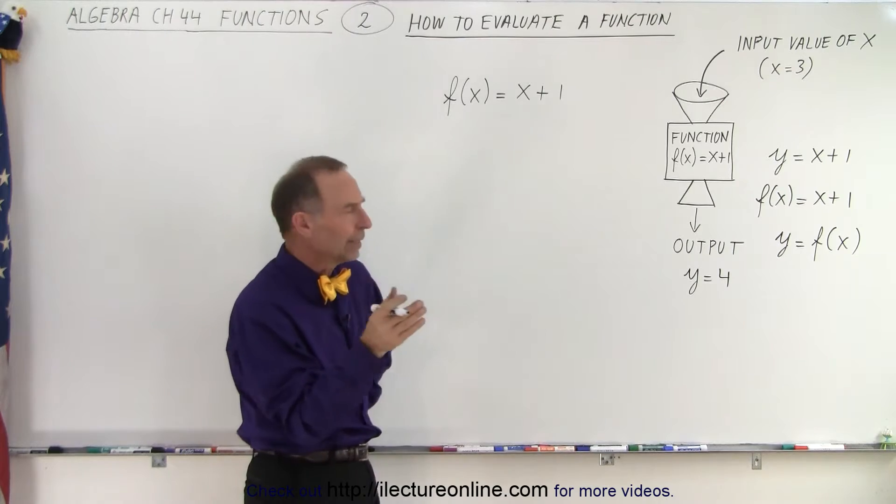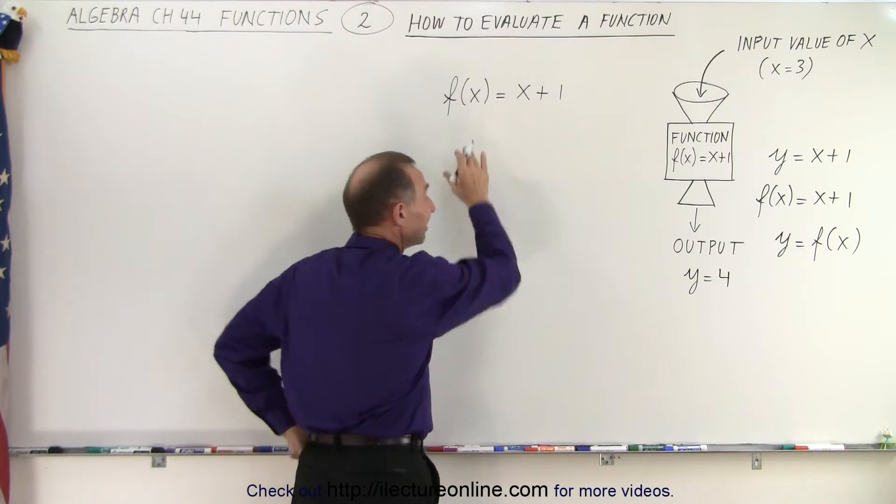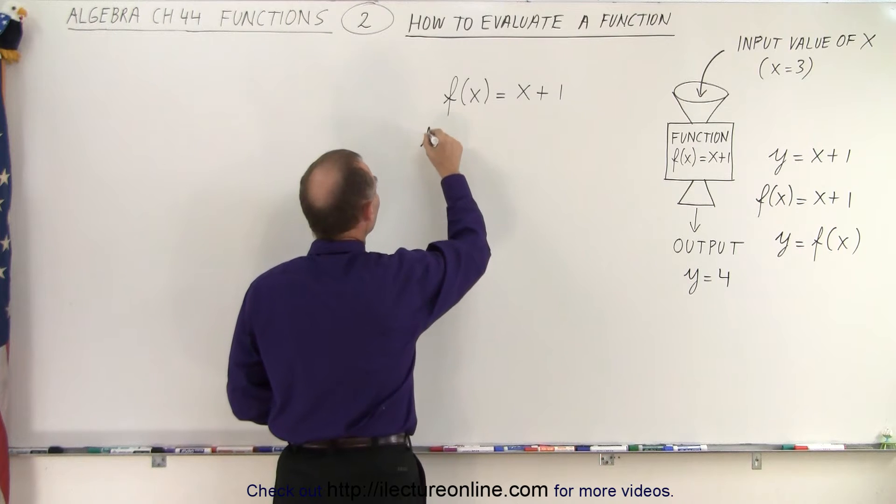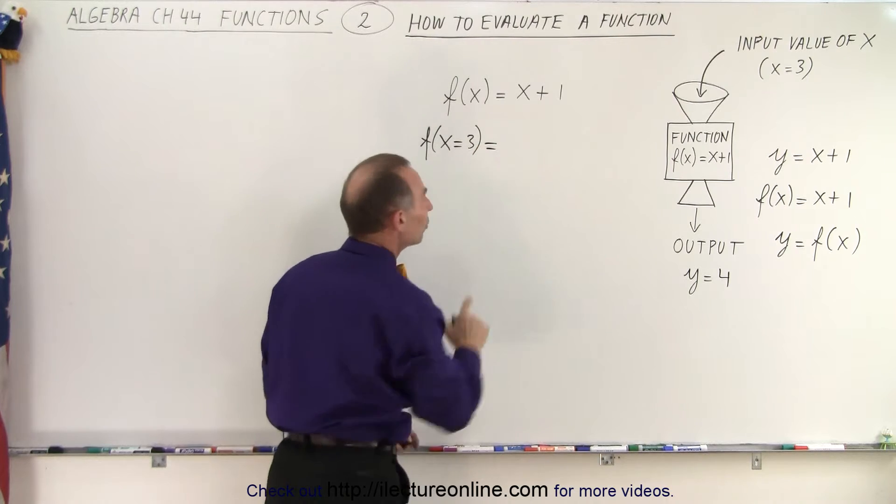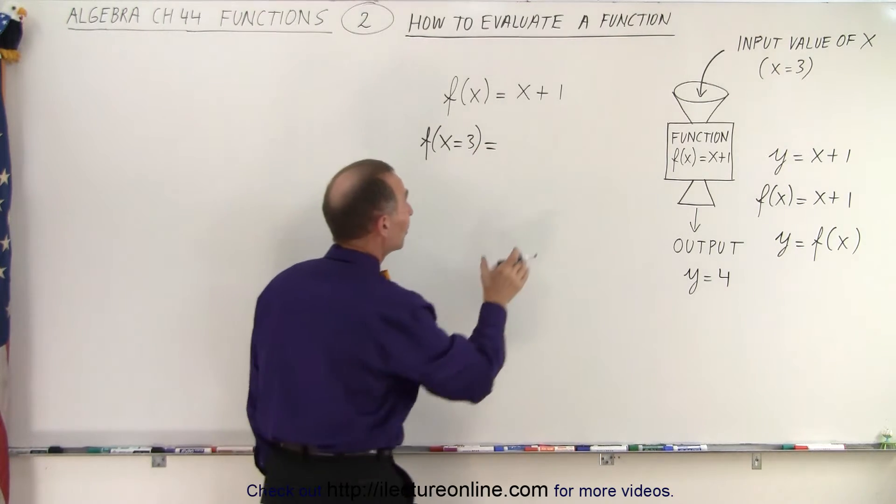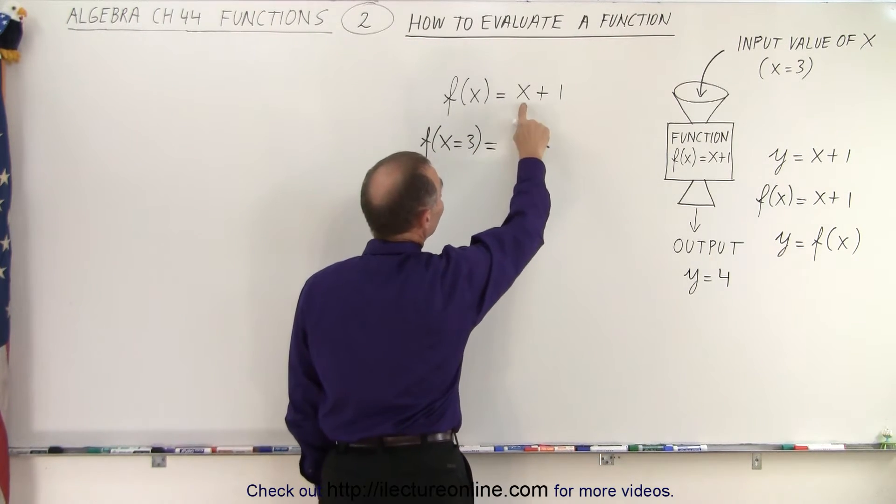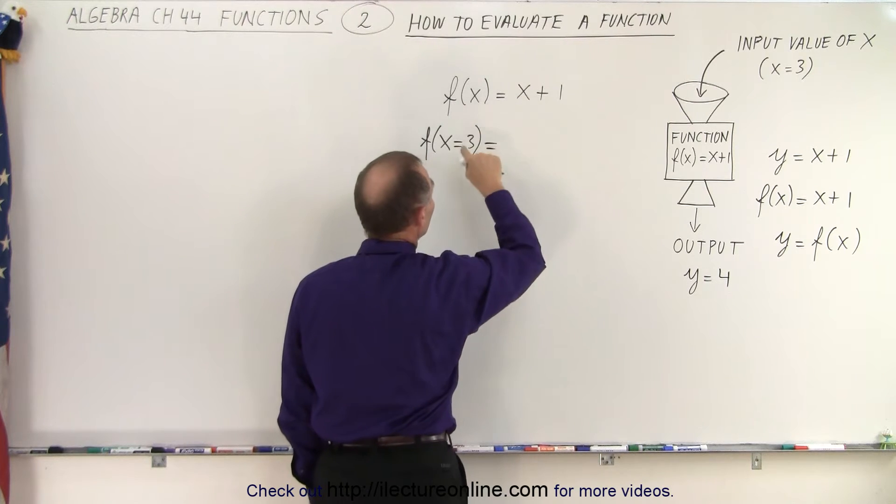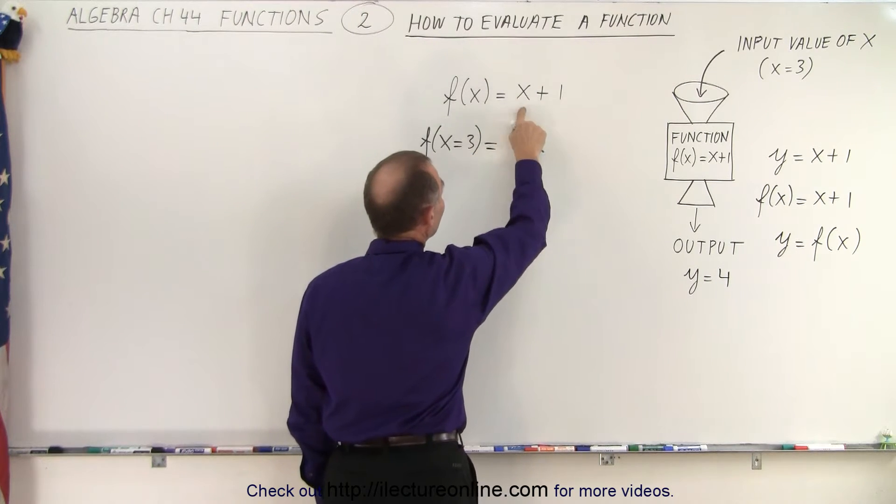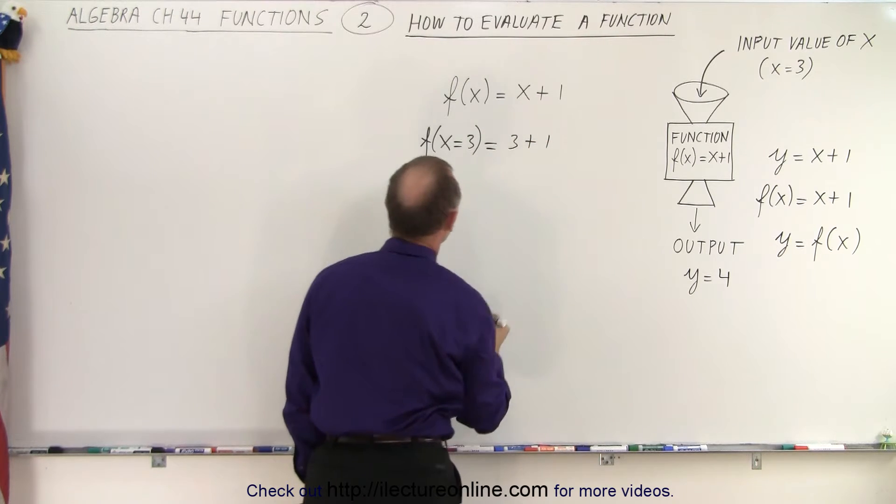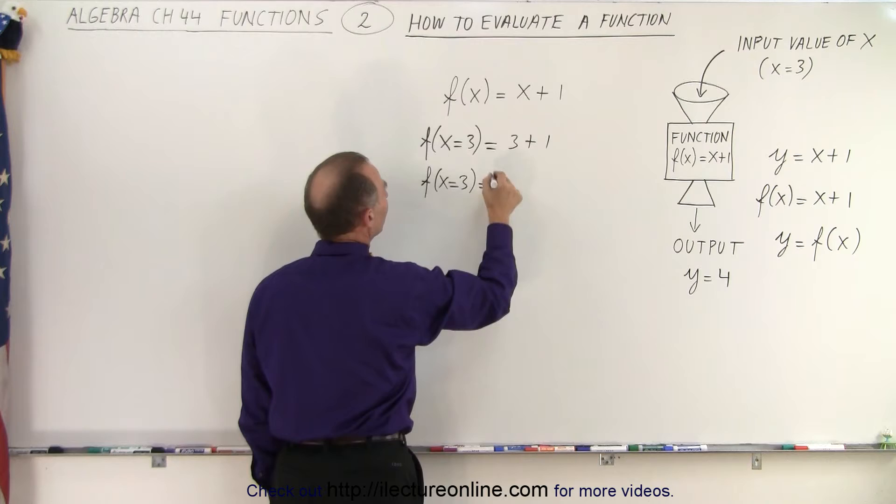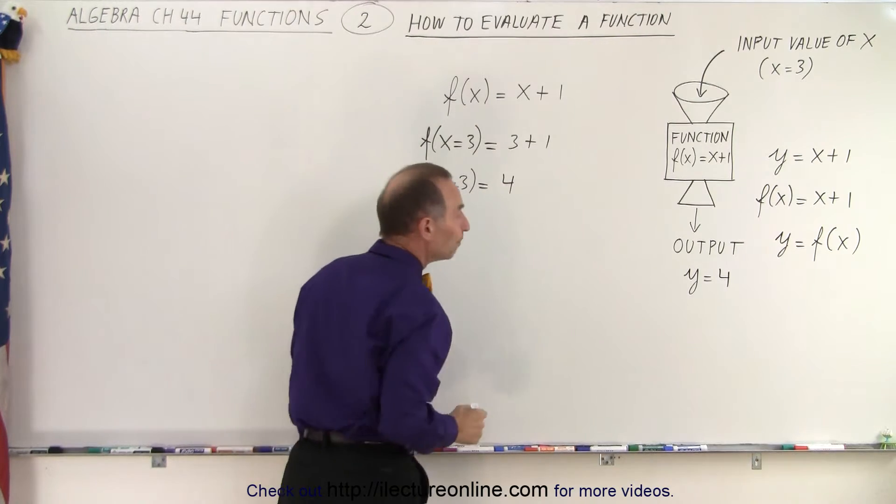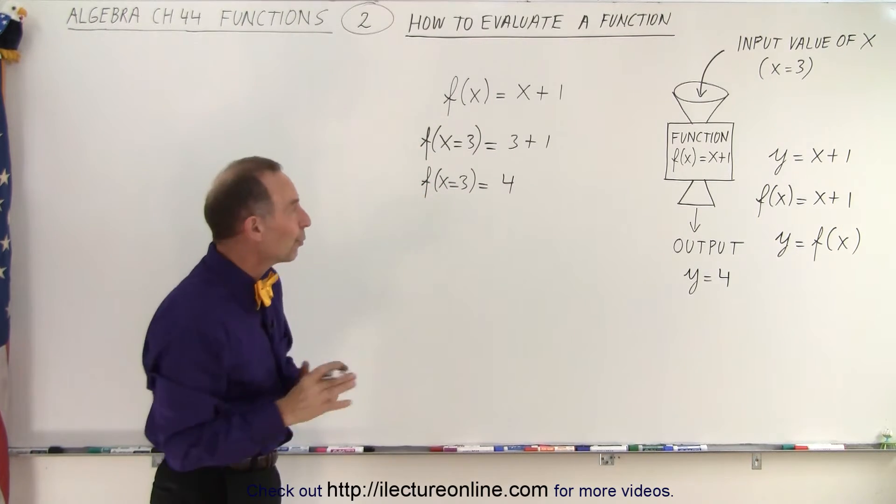Now we need to evaluate it. We're going to evaluate the function. This is how it's properly written. We say that f, the function, is going to be evaluated for the value of x equals 3. So what is that equal to? Well, now what we do is we take the function and wherever we see an x, we replace it by its proper value. So instead of writing x, we write 3 + 1. And so that means that f, when x = 3, is equal to 3 + 1, which is equal to 4. And that is the proper way of writing it.